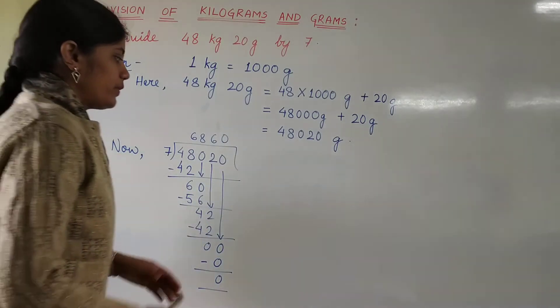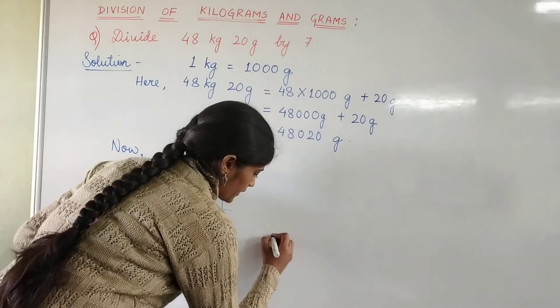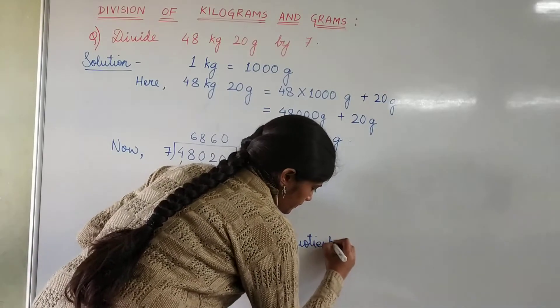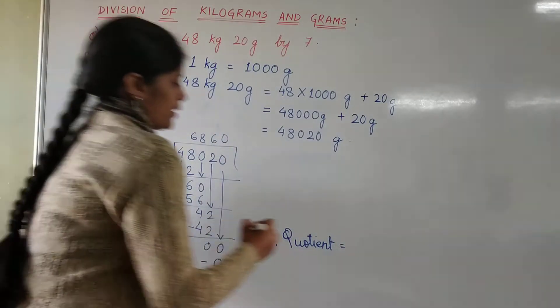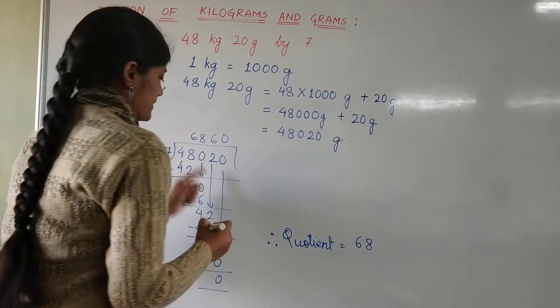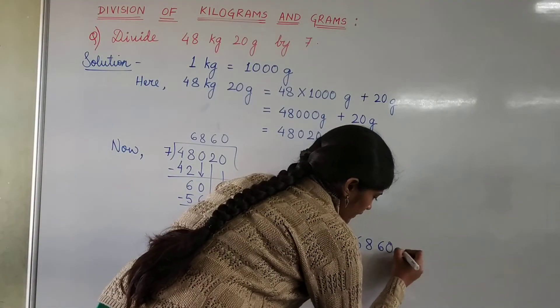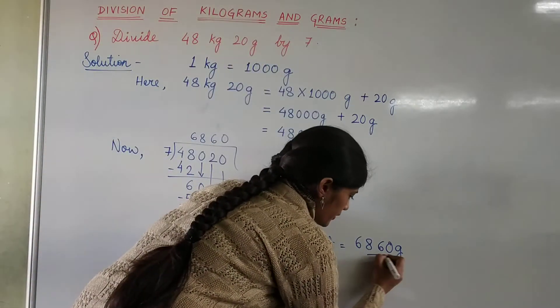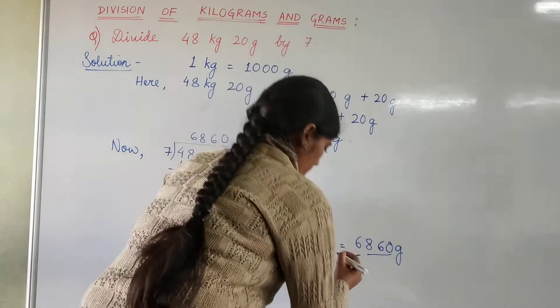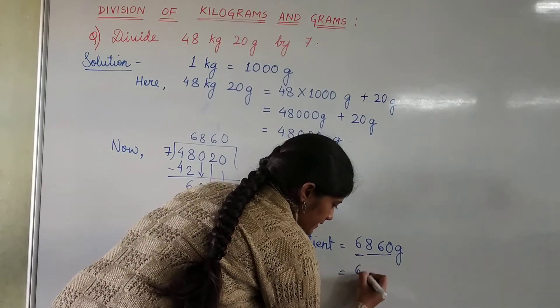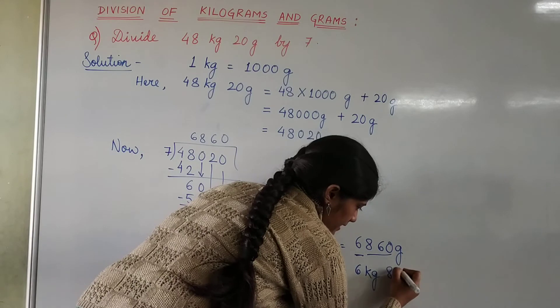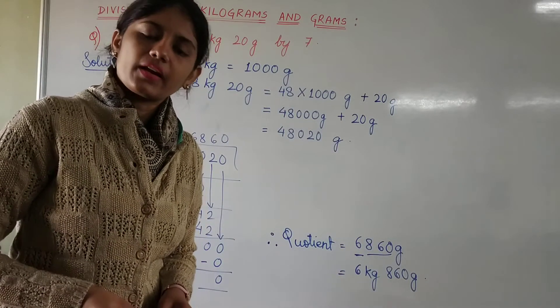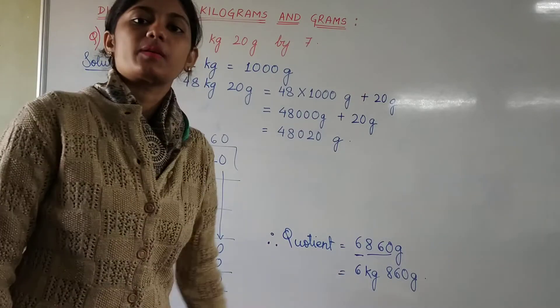Now it's time to write the quotient. The quotient is 6,860 grams, or it can be written as 6 kilograms 860 grams. The last three digits represent grams, the remaining represents kilograms.